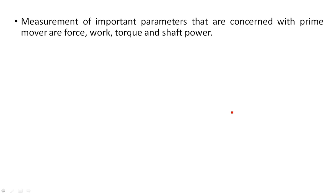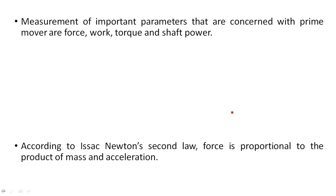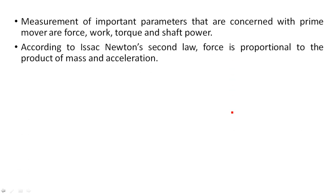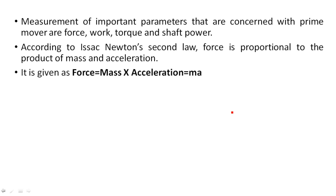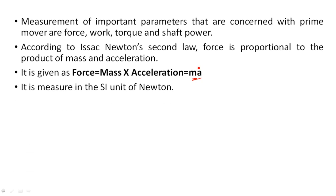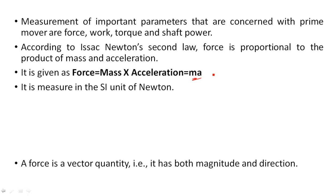Important parameters concerned with prime movers include force, work, torque, and shaft power. In this video, I am going to explain how to measure force as a physical parameter. When we apply a force on an object, we can measure that force using acceleration. According to Isaac Newton's second law, force is proportional to the product of mass and acceleration: F = ma, measured in the SI unit of Newton.